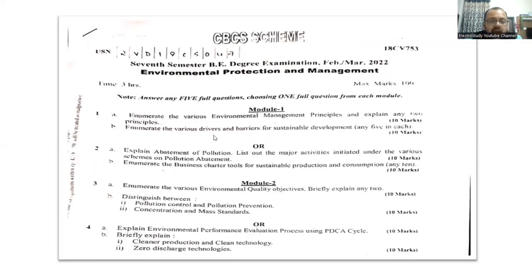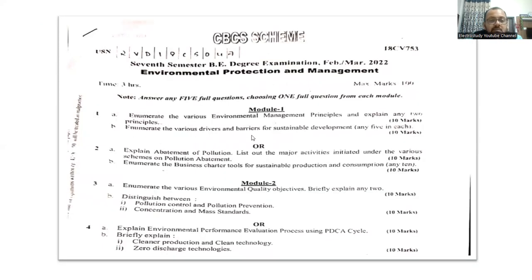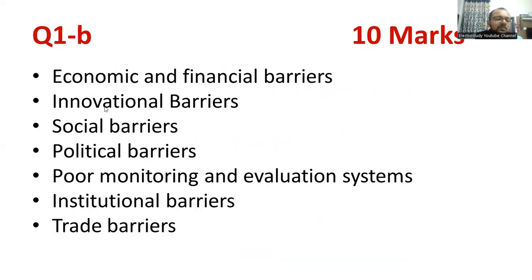Now question 1b: enumerate the various drivers and barriers for sustainable development. First of all you need to know what sustainable development is. You can give an example if necessary. You need to explain the various barriers — what are the hurdles of sustainable development? Prepare a checklist and make at least five points for question 1b.